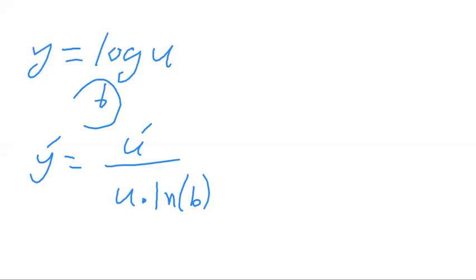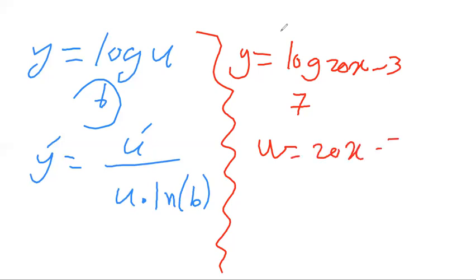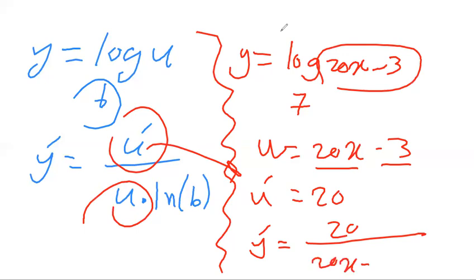Let's take an example: y = log_7(20x minus 3). Let u = 20x minus 3, so derivative of u is 20 (the constant −3 gives 0). The derivative of y is 20 over (20x minus 3) multiplied by ln(7).